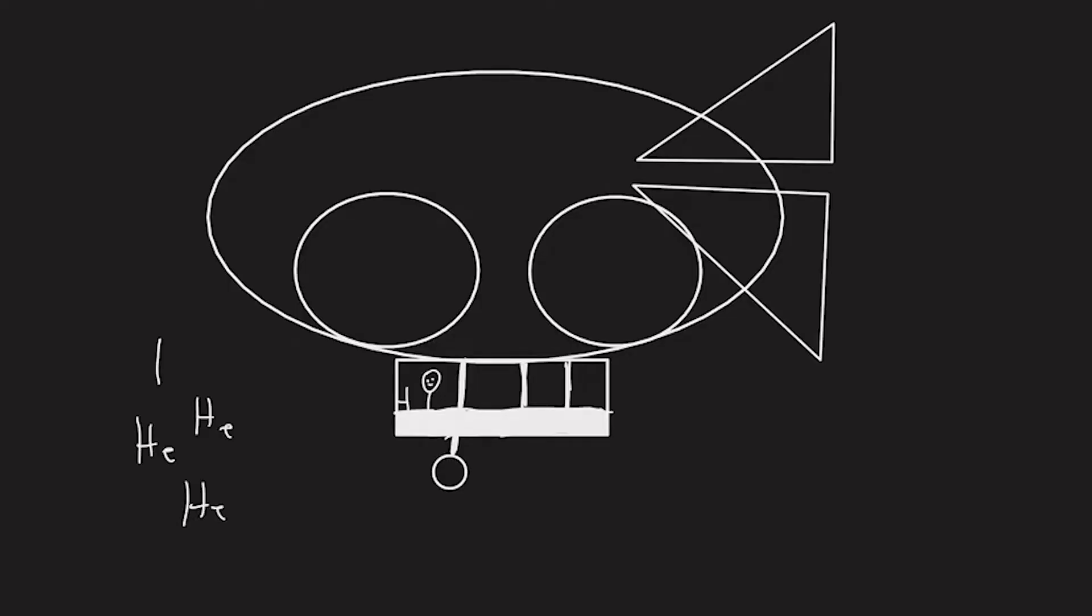Helium gas, which is lighter than air, is pumped into the envelope of the blimp. The surrounding air exerts a buoyant force on the blimp equal to the weight of fluid or air displaced. This buoyant force has to be greater than the force of gravity, or weight of the blimp, helium inside, and payload for it to rise.